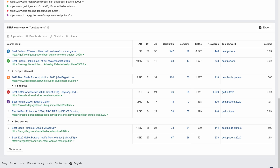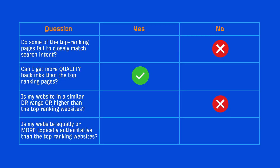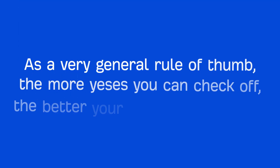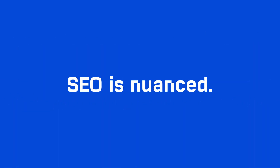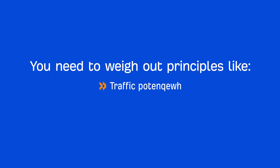Is my website in a similar DR range or higher than the top-ranking websites? The answer is no. And finally, my website is topically authoritative, so I'll give this a yes. It looks like we're at a tie between yeses and nos — and this is exactly why I said, as a very general rule of thumb, the more yeses you can check off, the better your chances of ranking. SEO is nuanced, and you need to weigh out other principles we discussed like traffic potential and business value. The best way to make sound judgment calls is through experience, so it will take time to hone your skills and gain a better grasp of keyword analysis.